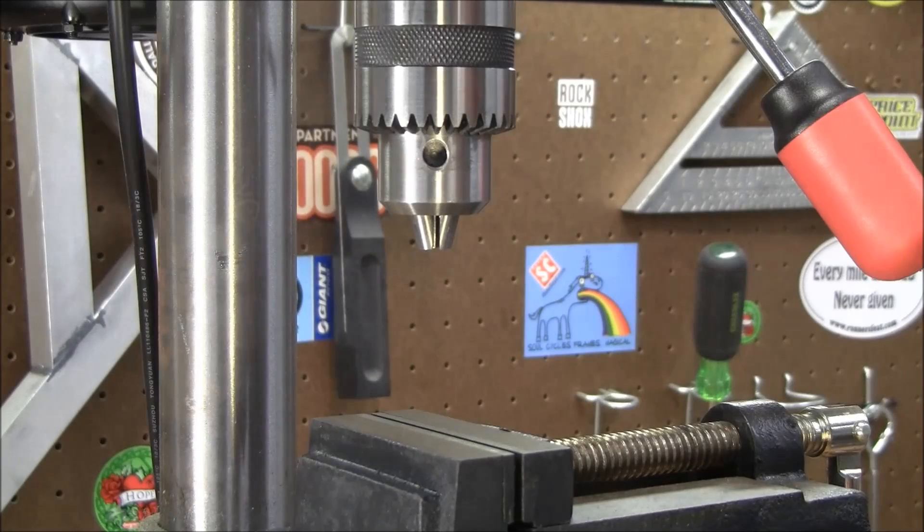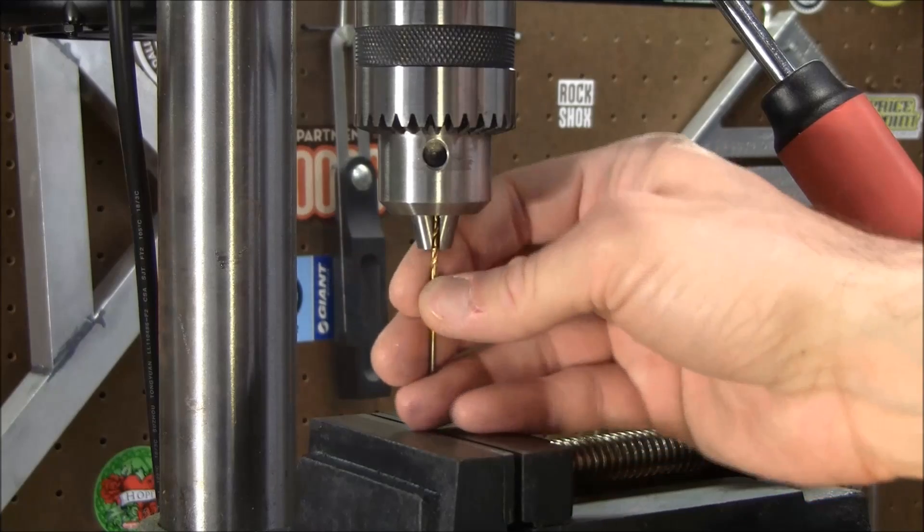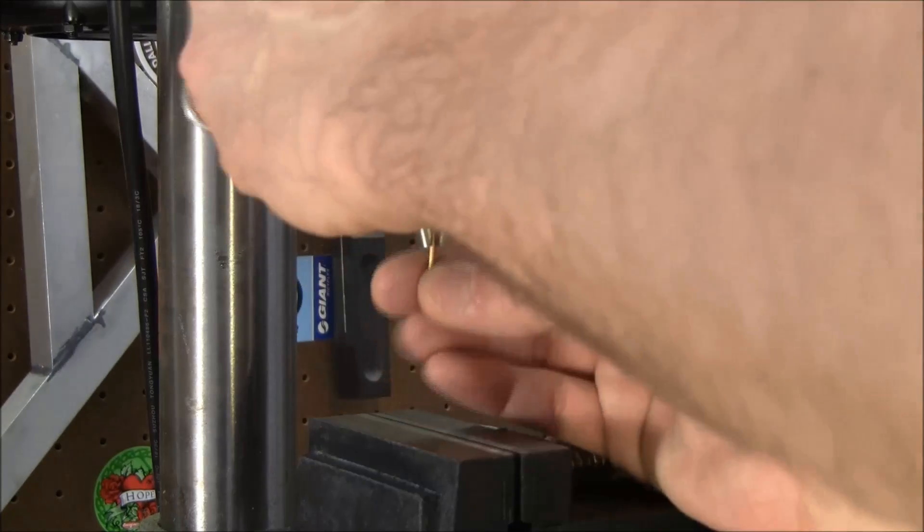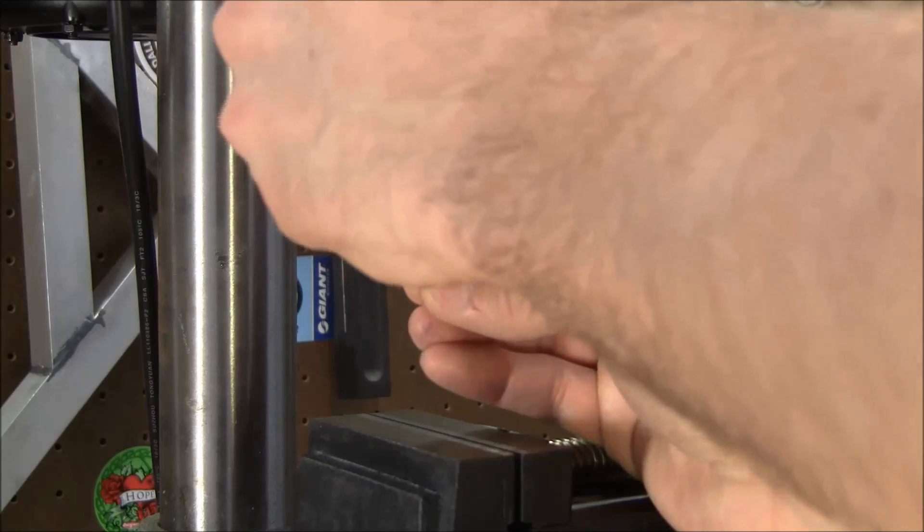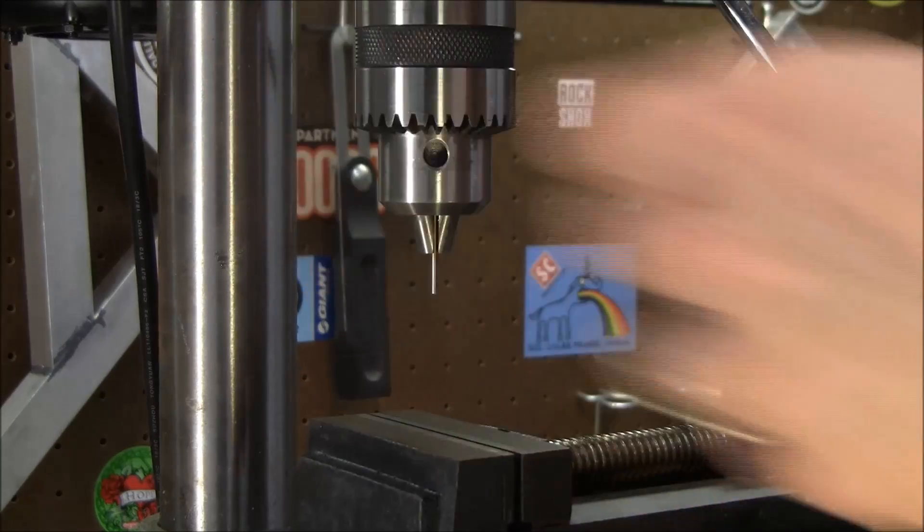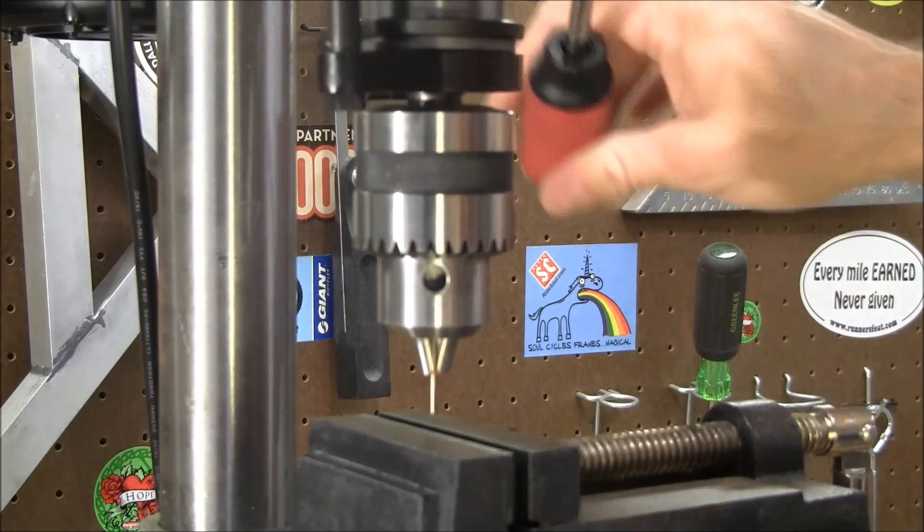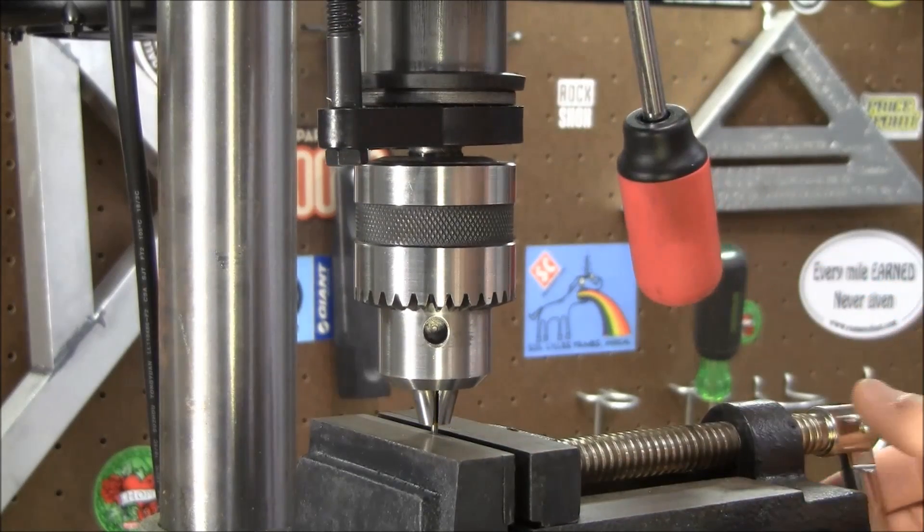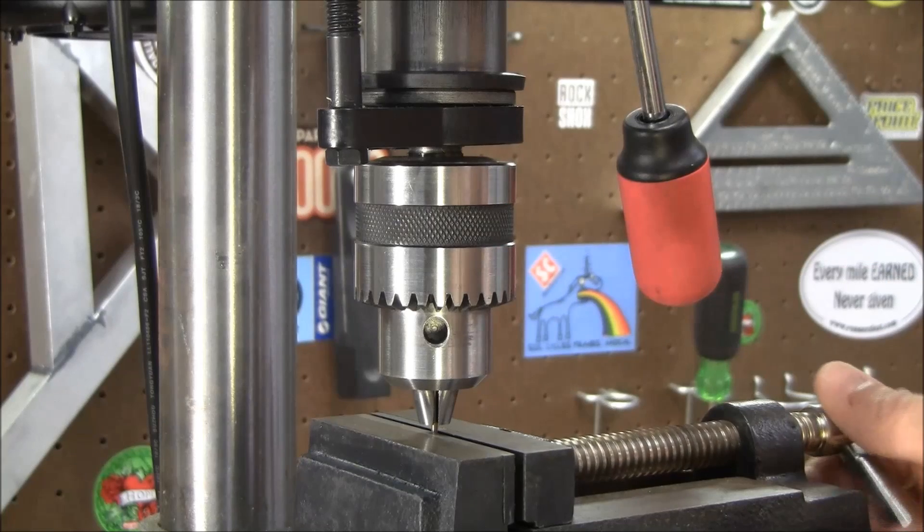To drill the initial hole through the set screw, we're going to take a 5 64ths drill bit and insert it into the press upside down. Lower it down to your drill press vise and clamp the bit into the drill press vise.